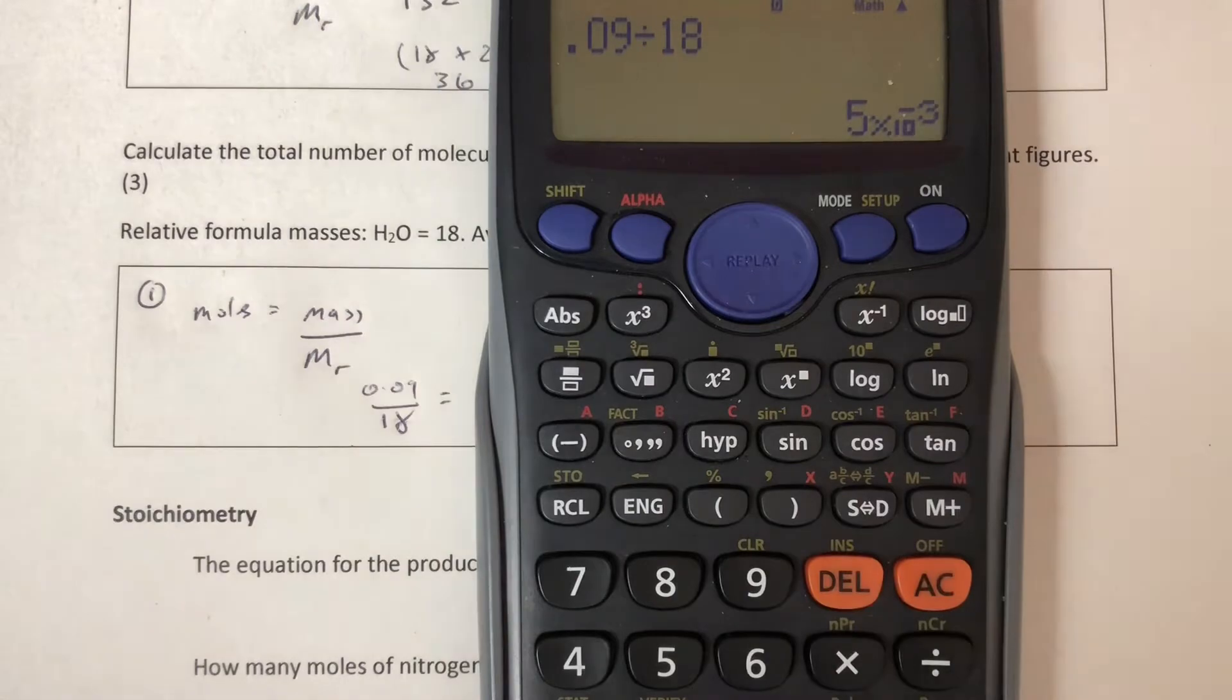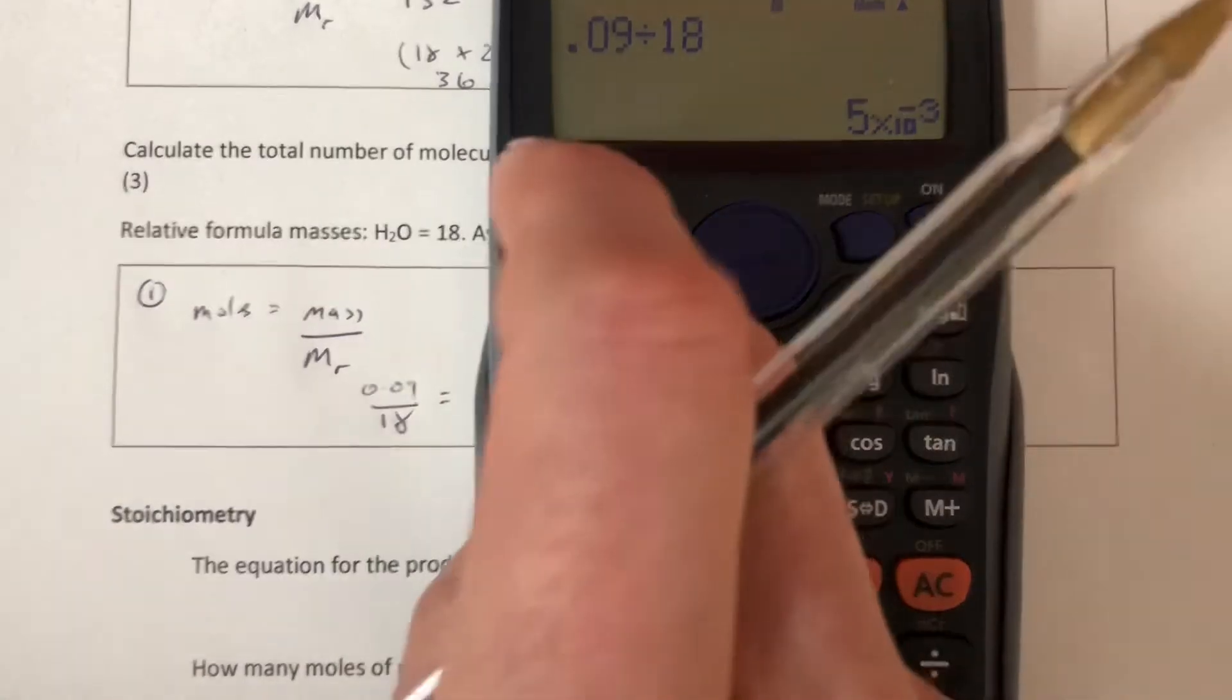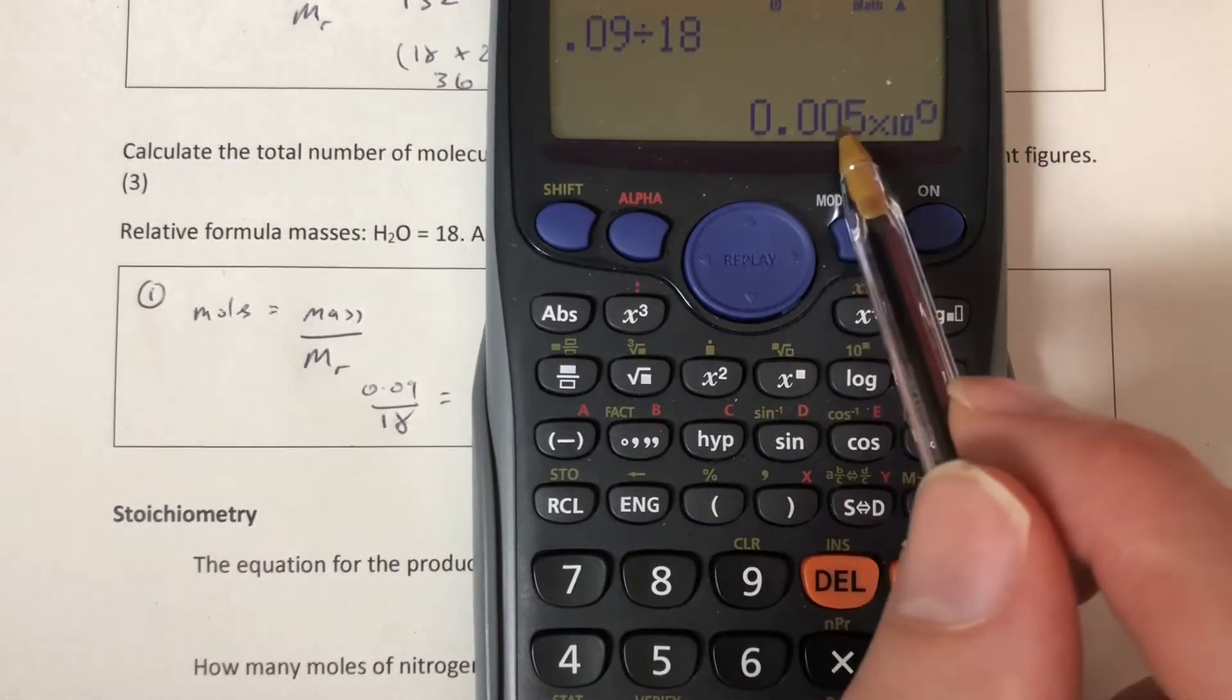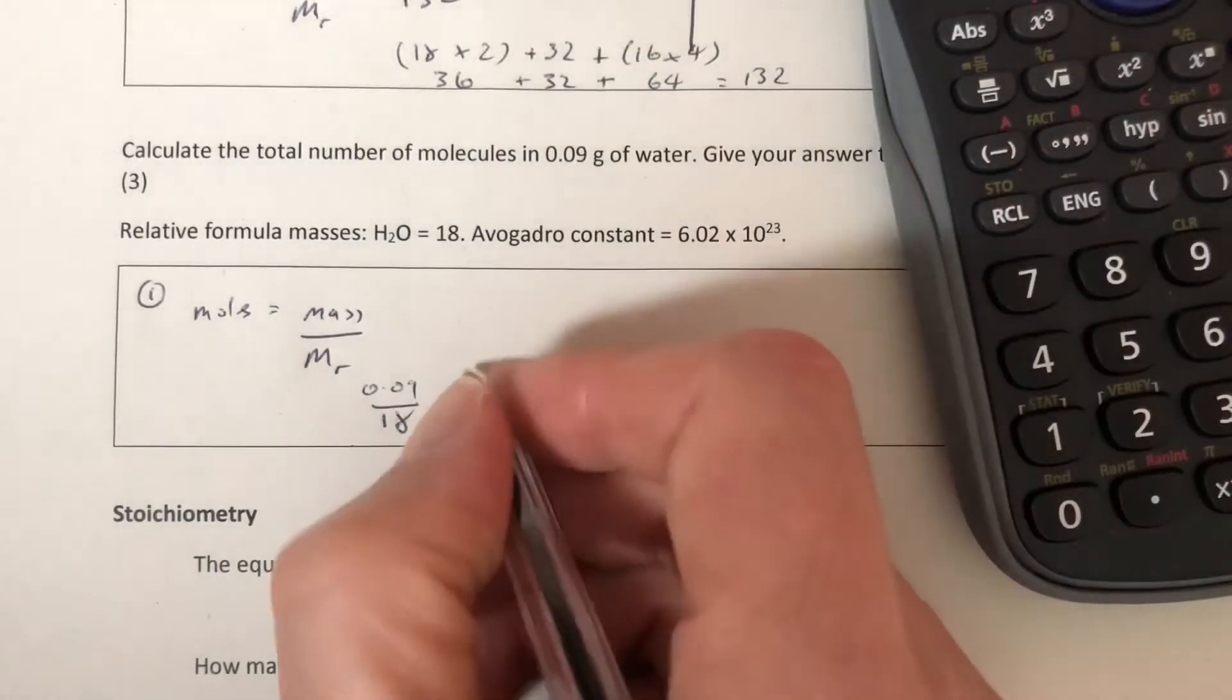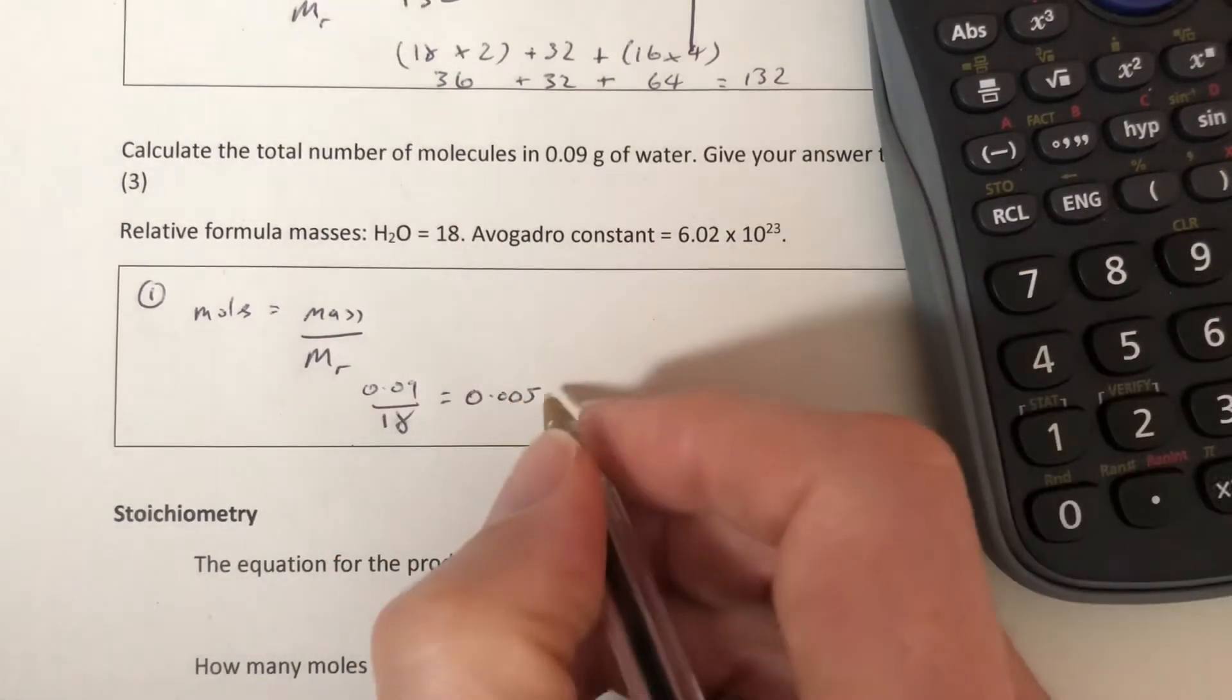If you want to convert it to a normal decimal with the calculator, shift to ENG, but you need to do it twice. Never quite know why, but you need to do it twice. 0.005 times 10 to the 0, so 0.005 if you want to write it out like that. In standard form that's 5 times 10 to the minus 3, which is 0.005 moles.